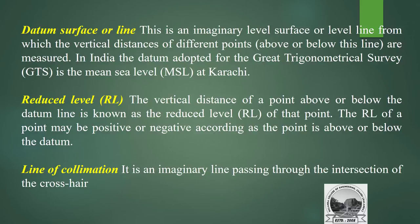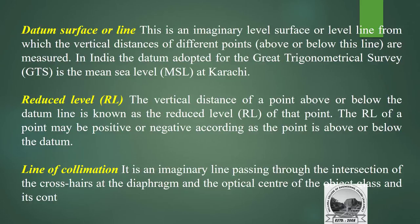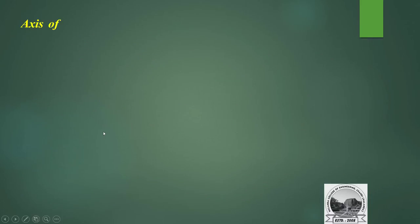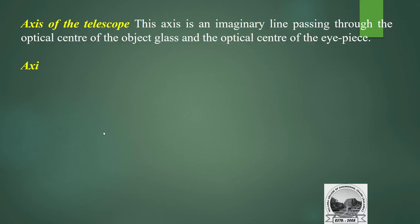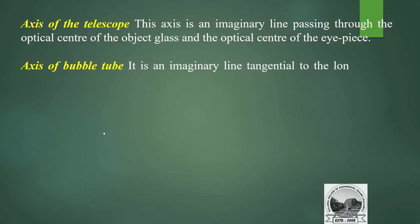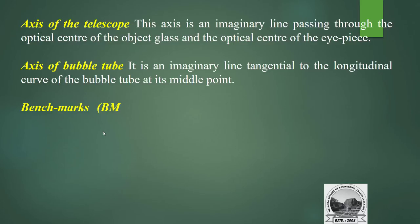Line of collimation: an imaginary line passing through the intersection of cross-hairs at the diaphragm and the optical center of the object glass and its continuation. Axis of the telescope: an imaginary line passing through the optical center of the object glass and the optical center of the eyepiece. Axis of the bubble tube: an imaginary line tangential to the longitudinal curve of the bubble tube at its middle point.